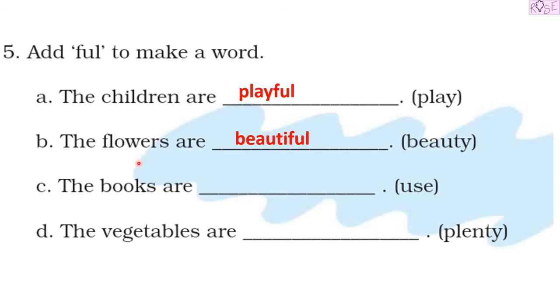Next sentence: 'The books are...' and we have 'use' in the brackets. 'Use' is also a verb, but when we add 'ful' at the end of the word, we get useful. The books are useful. This verb has been changed into an adjective by adding 'ful' as a suffix or word ending, and this adjective 'useful' is describing the books.